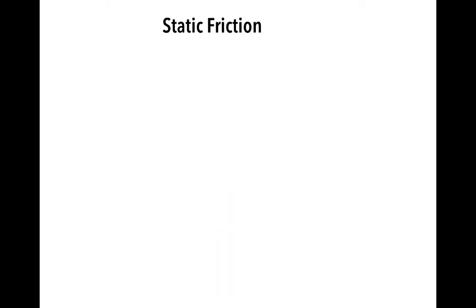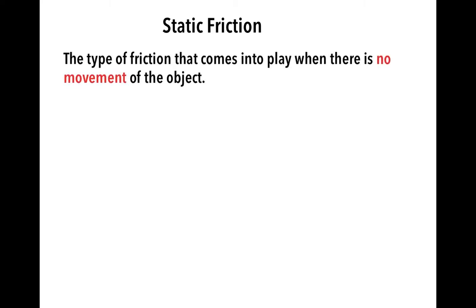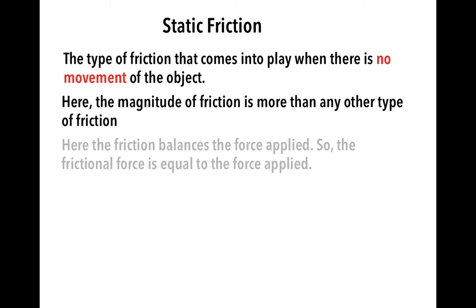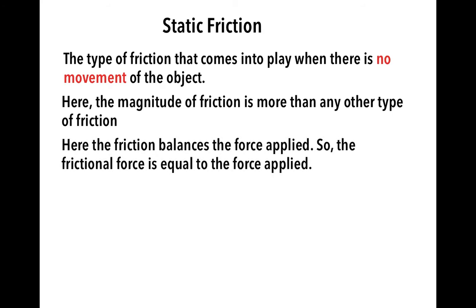The first type of friction is static friction — the type of friction that comes into play when there is no movement of the object. Here, the magnitude of friction is more than any other type of friction. The friction balances the force applied, so the frictional force is equal to the force applied.